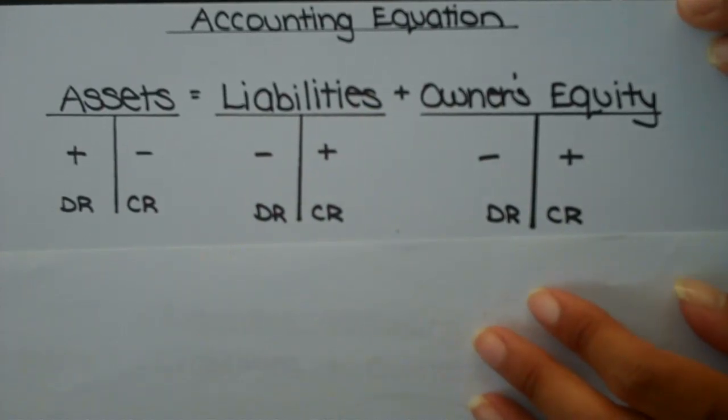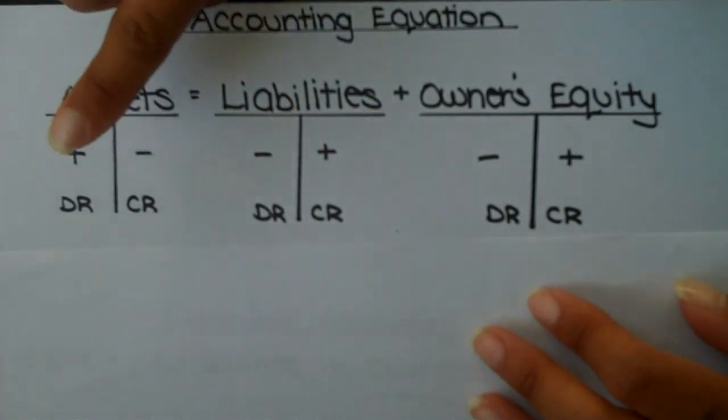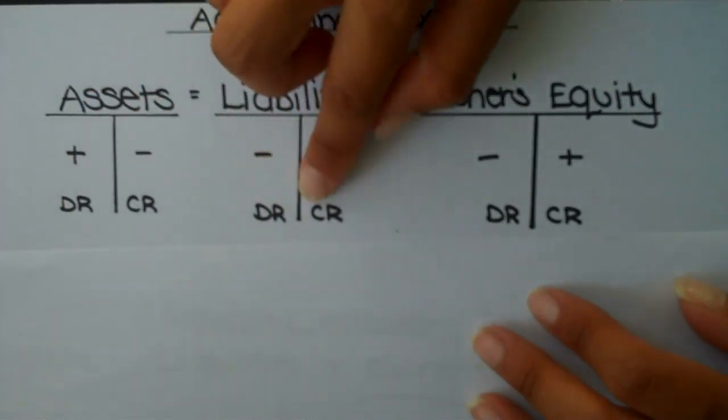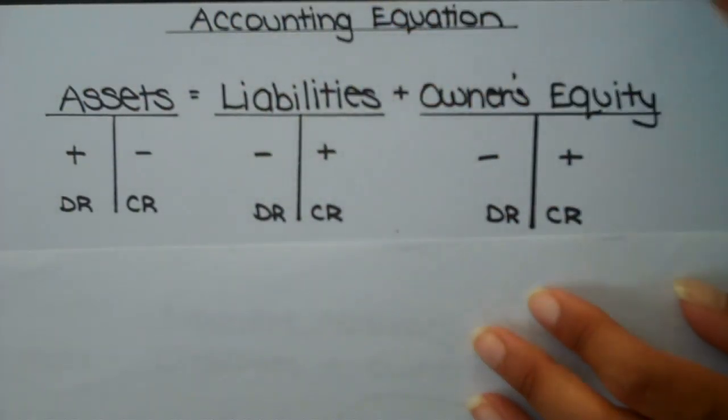We know that a T-account has both a left and a right side, which we call debit and credit. So I went ahead and identified that for each one of these components.